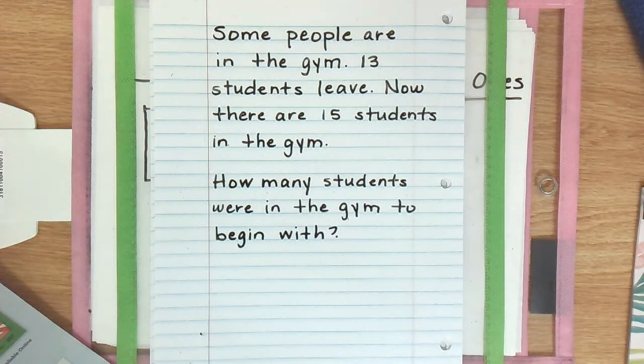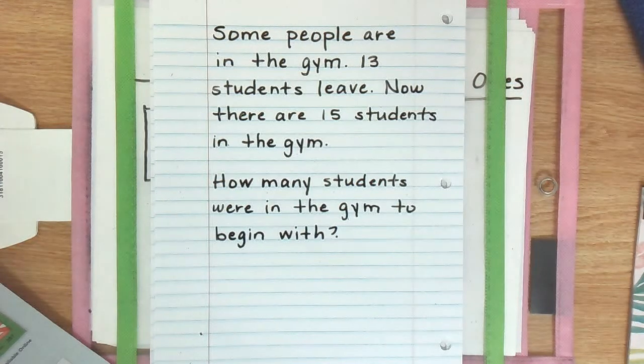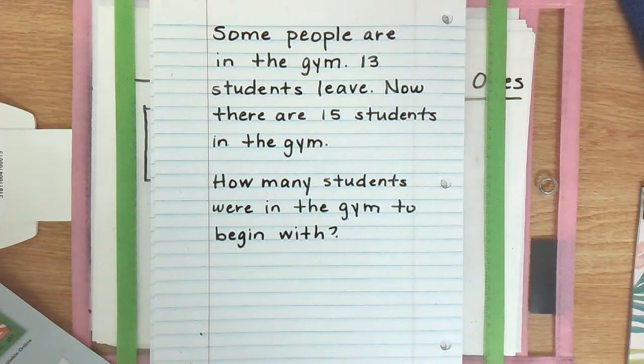In this lesson they want us to understand that two step word problems can be solved by first identifying and solving a hidden question. The answer to that hidden question is then going to be used to answer the question given in the problem.